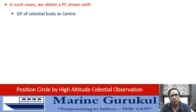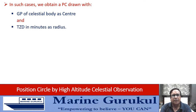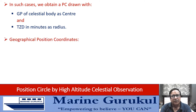How do we draw the position circle? We draw the position circle with the geographical position of the body as the center and the TZD, the true zenith distance in minutes, as the radius. How do we get the geographical position of the body, or the coordinates of the geographical position?